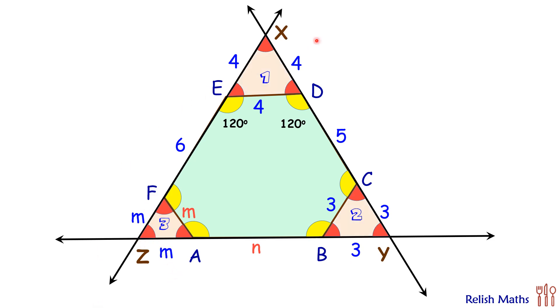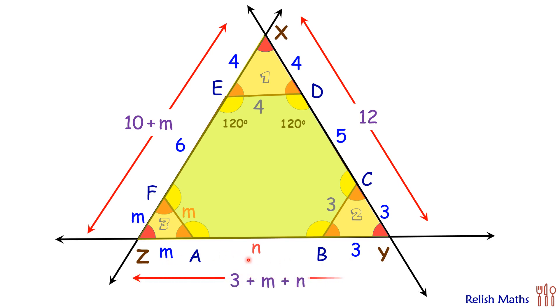Let's look at triangle XZY. In this triangle, the length XY is 12 cm. The length XZ will be 4 plus 6, which is 10 plus M cm. And length ZY is 3 plus M plus N cm.